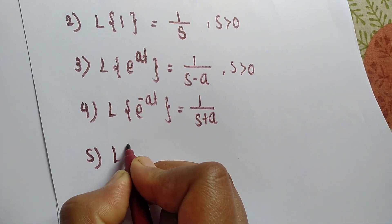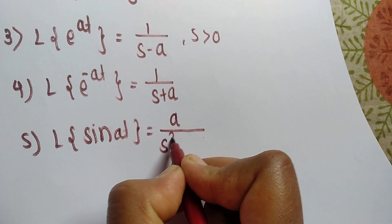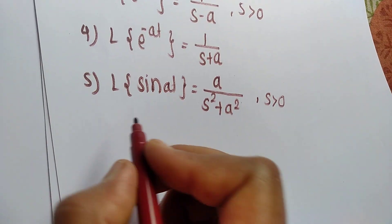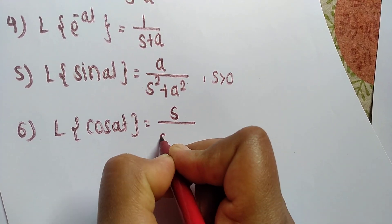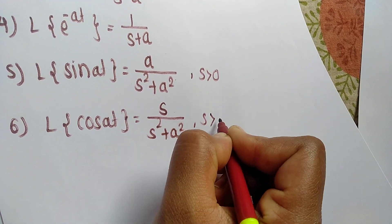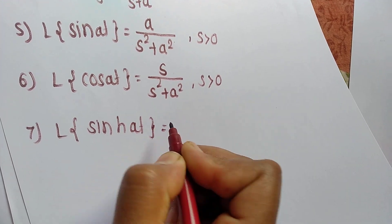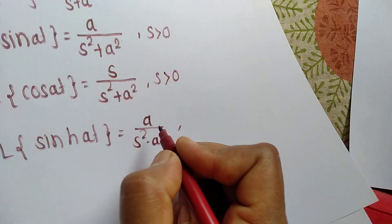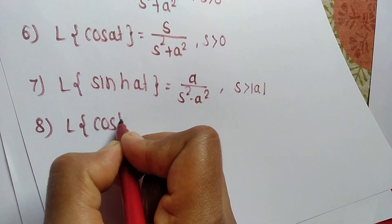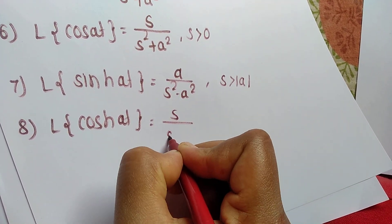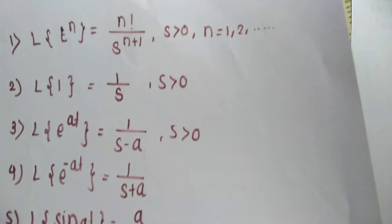Fifth formula for trigonometric functions: Laplace of sin at equals a divided by s squared plus a squared, with s greater than 0. Sixth formula: Laplace of cos at equals s divided by s squared plus a squared, with s greater than 0. Seventh formula: Laplace of hyperbolic sin at equals a divided by s squared minus a squared, with s greater than mod a. Eighth formula: Laplace of hyperbolic cos at equals s divided by s squared minus a squared, with s greater than mod a.